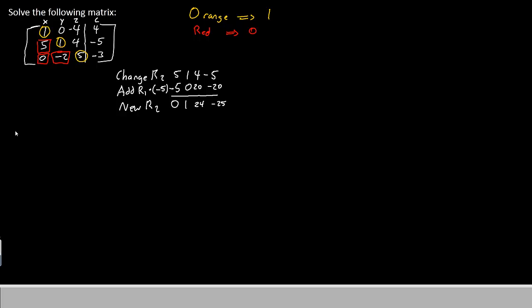So let's recopy the matrix. The first row does not change. The second row does change. It is now 0, 1, 24, negative 25. The third row also does not change. It is still 0, negative 2, 5, negative 3. And here's our dividing line. So we've taken care of the 5 here and the 0 here. They're both 0.